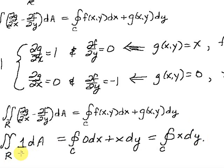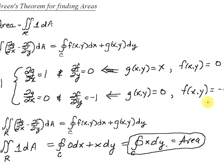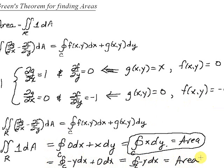So here we have a new formula for area. Another possibility is to use the second case where g(x,y) is 0 and f(x,y) is negative y. In that case, the line integral of negative y dx is equal to the area. In fact, there's a third area formula commonly used, derived from these two: by adding these two line integrals together and taking half of their value, we also get a formula for area.